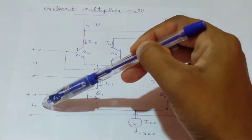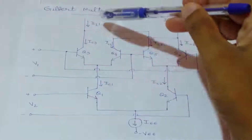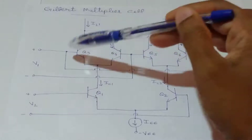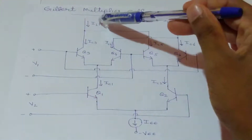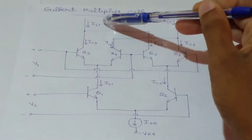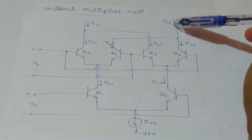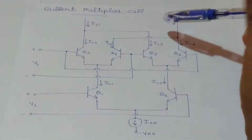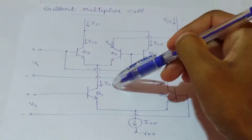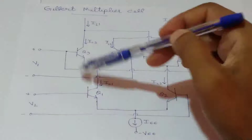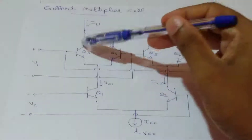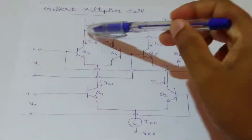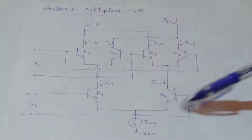Here V1 and V2 are our input voltages, and the differential output current delta I is proportional to the product of V1 and V2. That differential output current delta I equals IL1 minus IL2. To derive the equations for IL1 and IL2, we need to write equations for collector currents IC1 through IC6, considering each emitter coupled transistor pair separately.